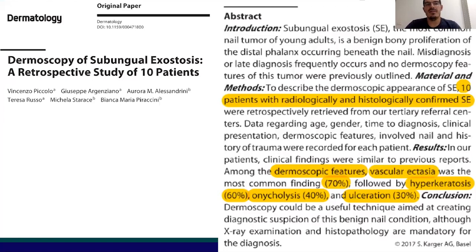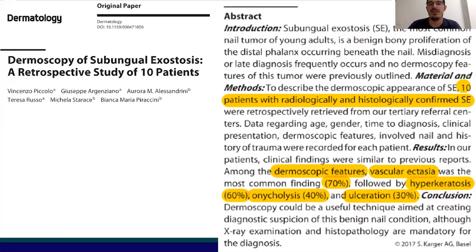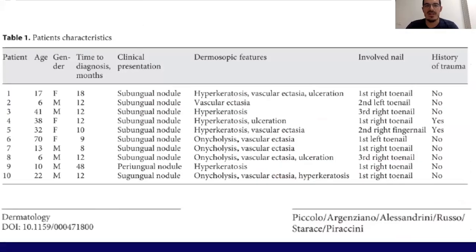In this paper — the retrospective study I mentioned at the beginning — we studied 10 patients with radiologically and histologically confirmed subungual exostosis. The main dermoscopic features found were vascular ectasia seen in 70% of patients, hyperkeratosis in 60%, onycholysis in 40%, and in one-third of patients we also saw ulceration.